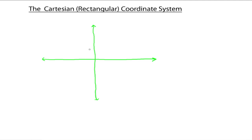You have a horizontal axis and a vertical axis. The horizontal one is called the x-axis and the vertical one is called the y-axis. These two number lines meet at a spot — that's where they cross — and you can think of that as the zero for each of the number lines. Going out to the right are positive numbers, and going out to the left are negative numbers.